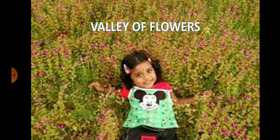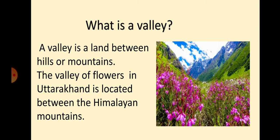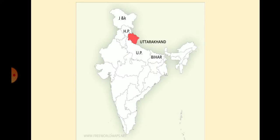It is very beautiful, isn't it? Do you know what is a valley? A valley is a land between hills or mountains. The Valley of Flowers is in Uttarakhand, and it is located between the Himalayan mountains. Look at the location of Uttarakhand on the map of India — the red marked state is Uttarakhand. It is between Himachal Pradesh and Nepal.